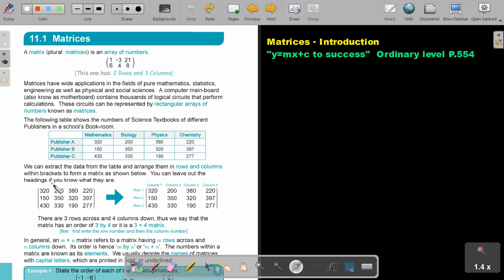We can extract the data from the table and arrange them in rows and columns, within brackets to form a matrix as shown below. You can leave out the headings if you know what they are. So basically, we just rewrite that inside. Remember, this is the columns and this is the rows. But always first mention the rows.